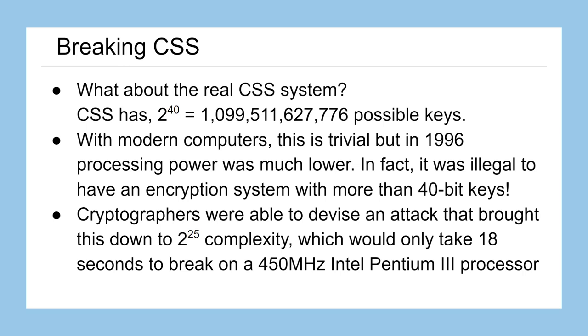And you might not think that going from 2 to the 40 to 2 to the 25 power would be that much better, but it really was. If you remember working in powers of 2 here, we effectively halved the number of possible keys from a trillion 15 times, so that's pretty substantial. In fact, with modern computing at the time, the 450 megahertz Intel Pentium 3 processor only took about 18 seconds to crack the keys for your DVDs.